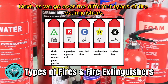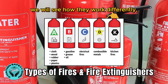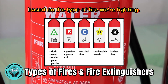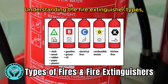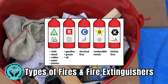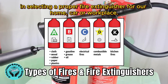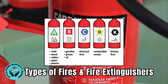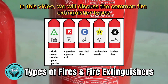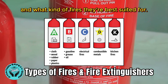Next, as we go over the different types of fire extinguishers, we will see how they work differently based on the type of fire we're fighting. Understanding the fire extinguisher types and their uses is the first step in selecting a proper fire extinguisher for our home, car, or workplace. In this video, we will discuss the common fire extinguisher types and what kind of fires they're best suited for.